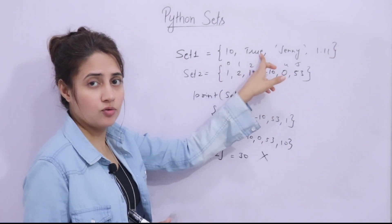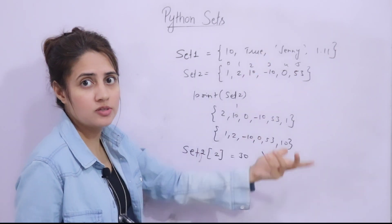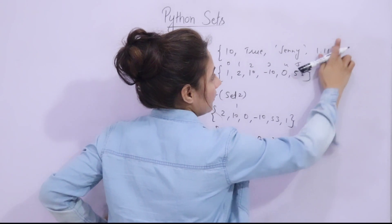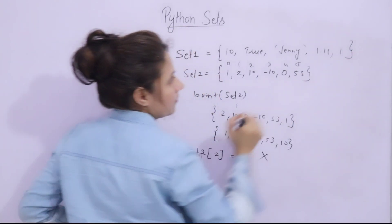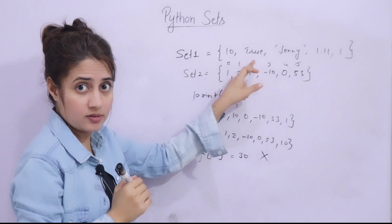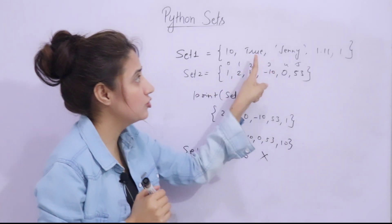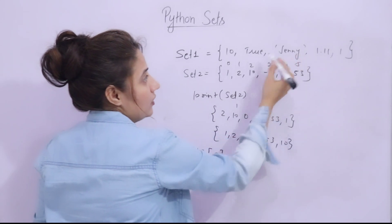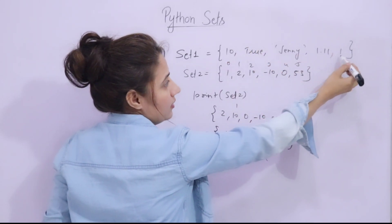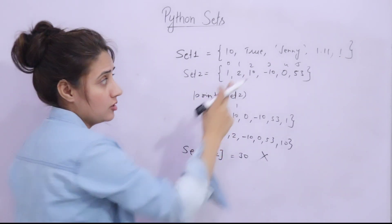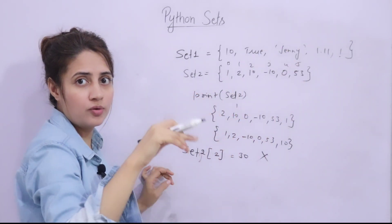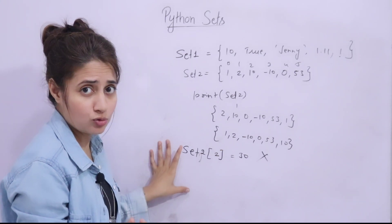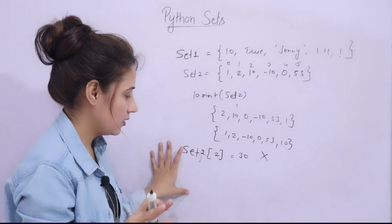Heterogeneous elements — mixed data types — are allowed in a set. One interesting edge case: if you write 1 and True in the same set, these are duplicates because in Python True equals 1 and False equals 0. So the set will display only one of them. Similarly, 0 and False are also duplicate values. We'll now see all of this practically, along with methods like add, remove, discard, and clear.